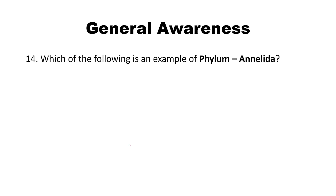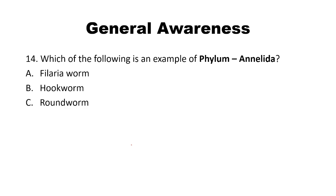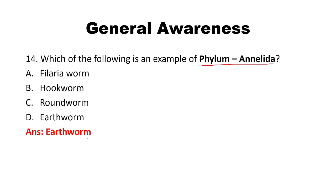Which of the following is an example of Phylum Annelida? Options: Filaria worm, Hookworm, Roundworm, Earthworm. The answer is Earthworm. Earthworm is an example of Phylum Annelida.